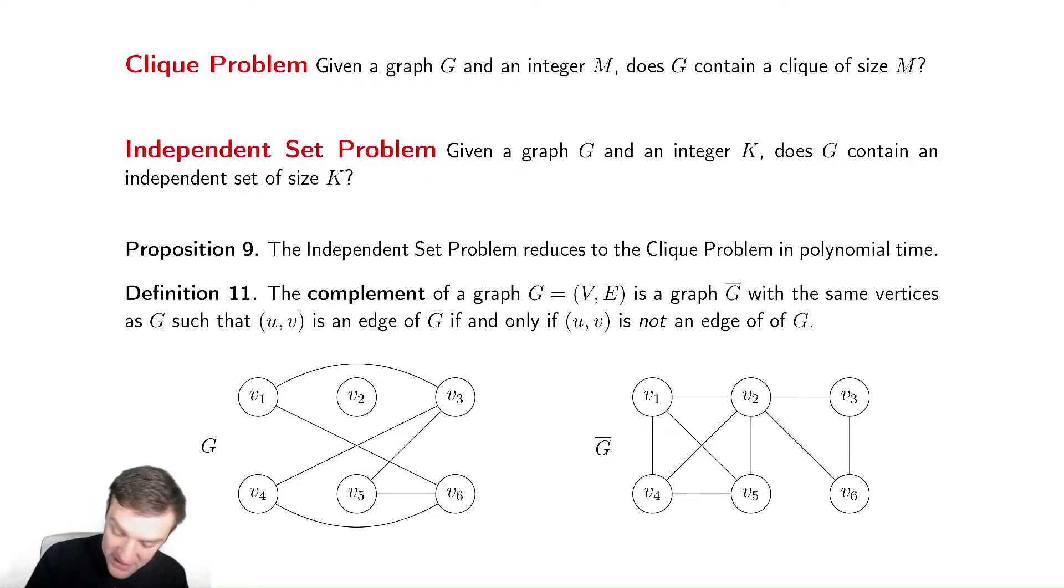So the complement of a graph is another graph with the exact same vertices. So we have my graph, we have the exact same vertices. But if there is an edge in G, then there is not an edge in G bar, and vice versa. If there is an edge in G bar, then that edge does not exist in G. This is our set complement for a graph. We're effectively finding the complement of the set of edges.